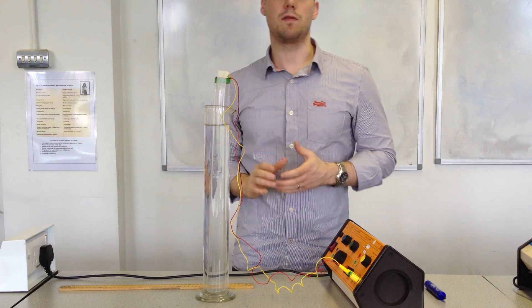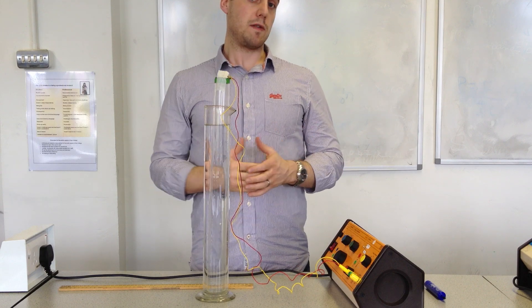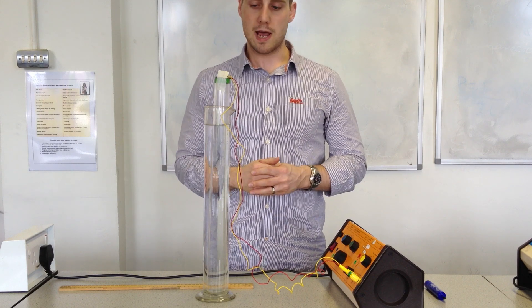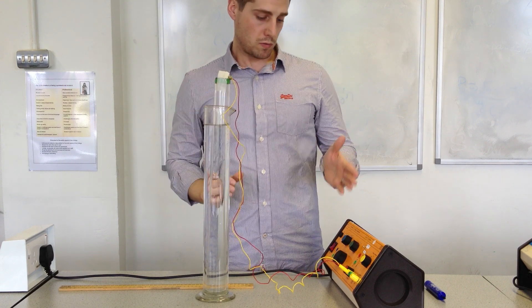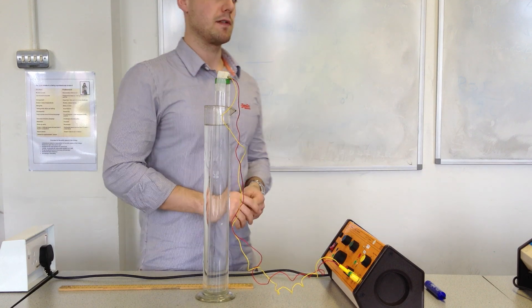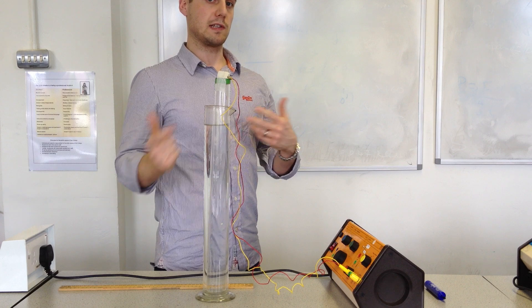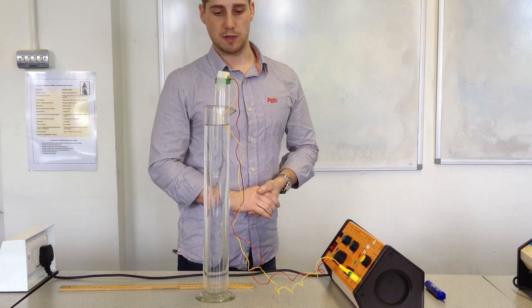Now the first standing wave to form is the fundamental. Now that provides a way for us to determine what the speed of sound in air is. Because what we will do is find when we have a fundamental. We will know the frequency of the wave producing that fundamental and the length of the pipe. We can use that to determine the wavelength, and then from that we can determine the speed of sound.